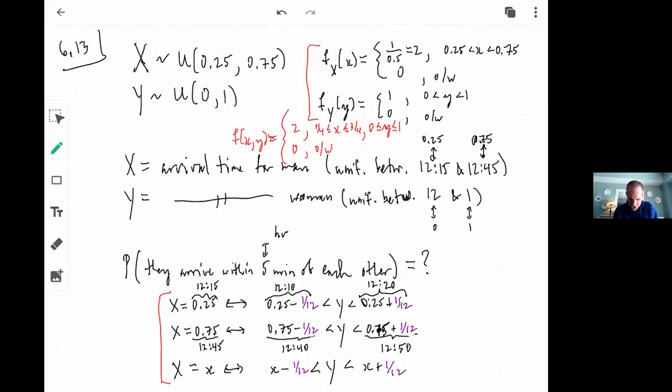We have the marginals up here for X, which we had found before, and for Y. And once we have those, we have the joint probability distribution.